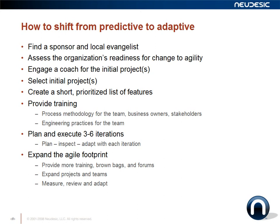Once you have a coach engaged, select an initial project or series of projects. My recommendation is to start small — you don't want to introduce agile across the entire organization at once. Take a small team or small product as your pilot or sample case. The goal of this pilot project is to show positive benefits to the organization and help answer how this methodology can benefit the organization in the long run. You want to create a short, prioritized list of features to support the project, which doesn't need to be extensive and will grow over the course of the pilot.